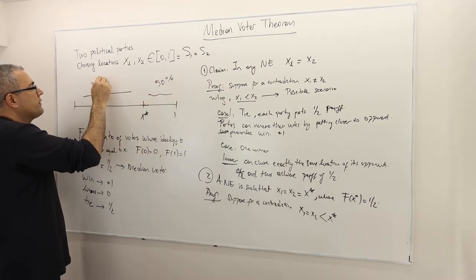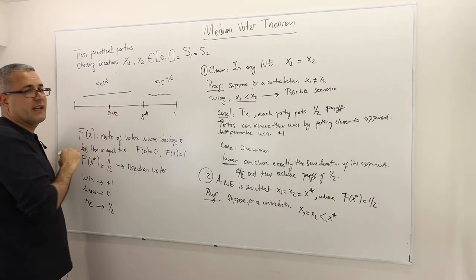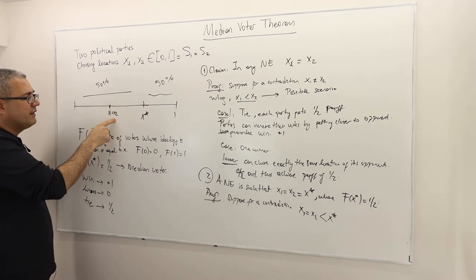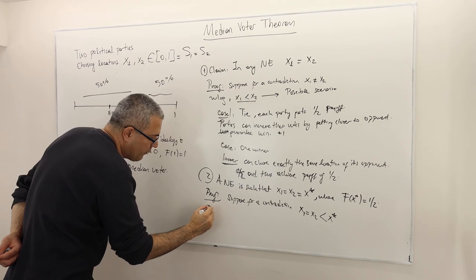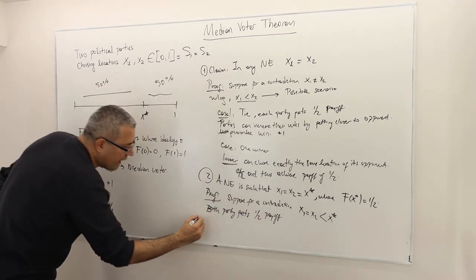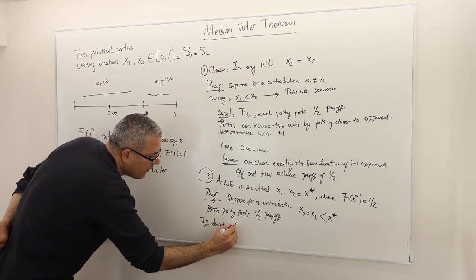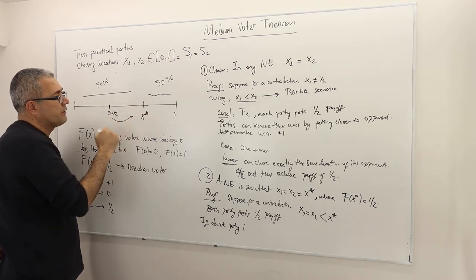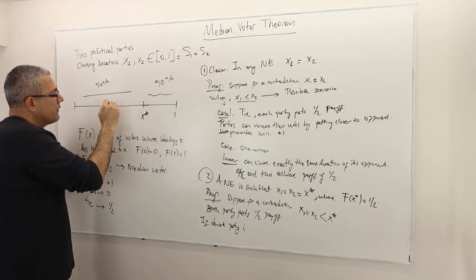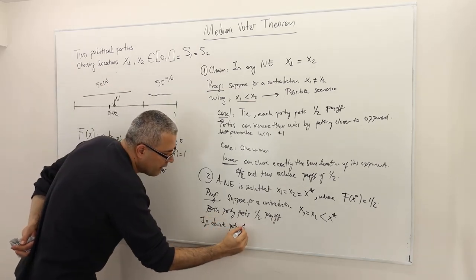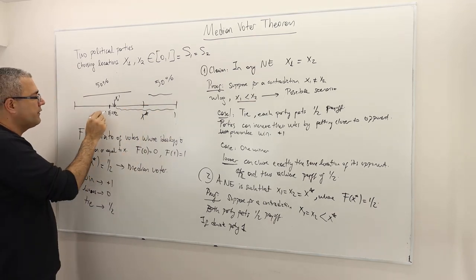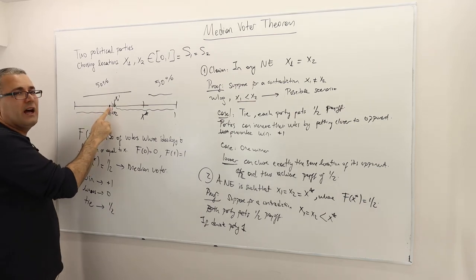In this case, because both political parties are at the same location, it's a tie and both parties get a payoff of one half. However, if party 1 deviates somewhere closer to x star — say x1 prime somewhere between x1 and x star — party 1 gets all the voters to the left plus some, and they split the voters near x1 prime. Party 2 gets the remaining. The key is that the voters between x star and 1 are 50% of the total.